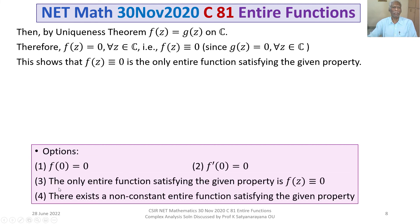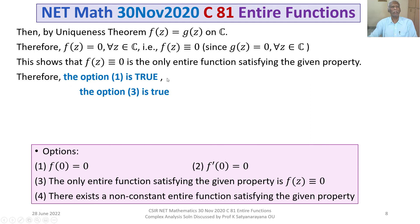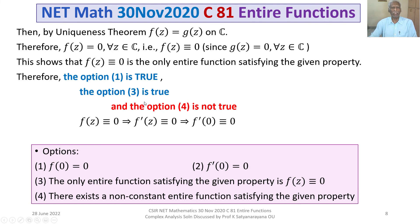Let's look at our options. Option 3 says precisely that the only entire function satisfying the given property is F(Z) = 0 — so option 3 is true. Since F(Z) ≡ 0, we have F(0) = 0, so option 1 is true. Since F(Z) ≡ 0 is the only entire function satisfying the property, there does not exist a non-constant entire function satisfying it, so option 4 is not true. Since F(Z) ≡ 0, its derivative F'(Z) ≡ 0, therefore F'(0) = 0, so option 2 is also true.